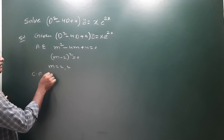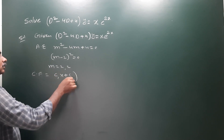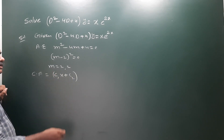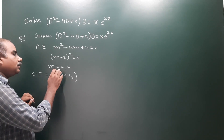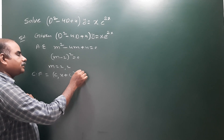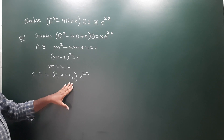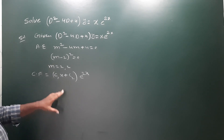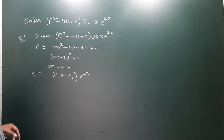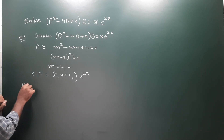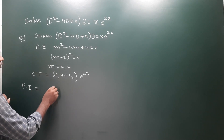For two equal roots, the complementary function is taken as (c₁ + c₂x)·e^(rx). Both roots are equal to 2, so the complementary function is (c₁ + c₂x)·e^(2x). That is the complementary function.